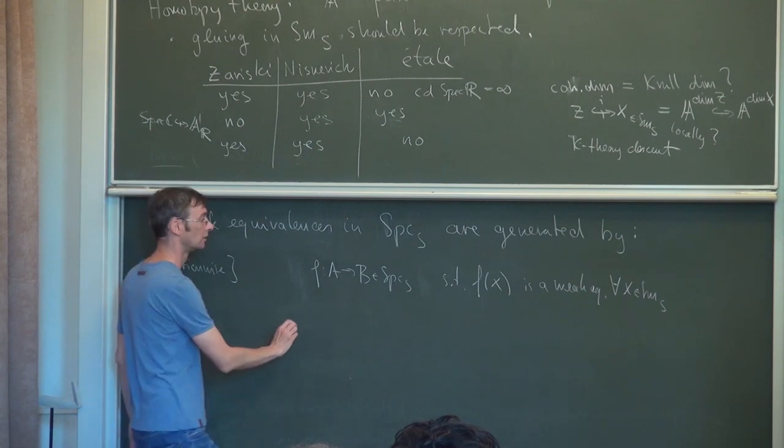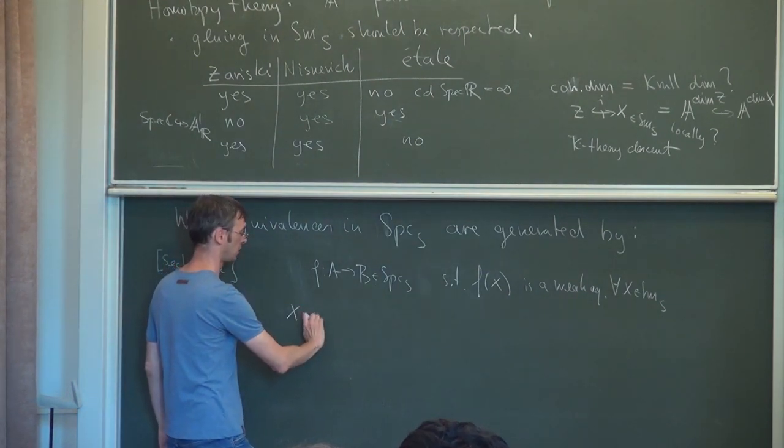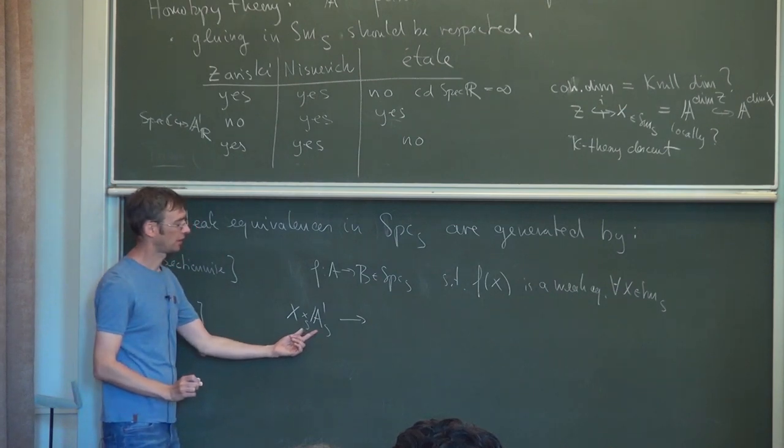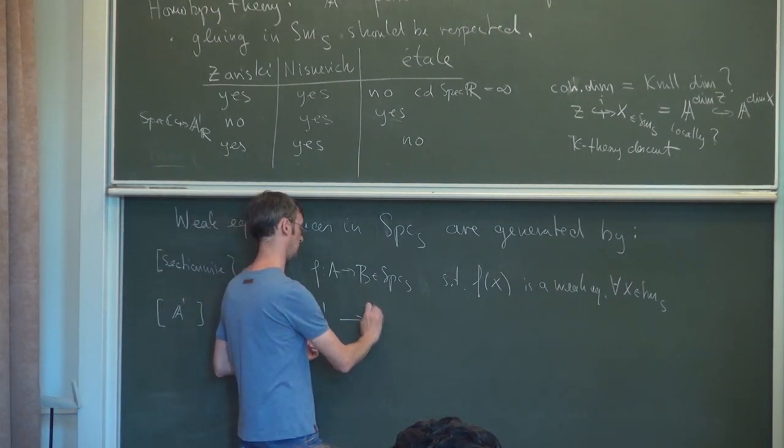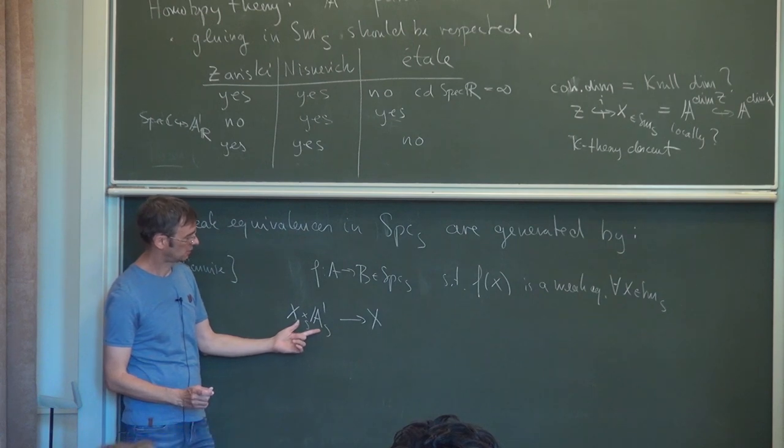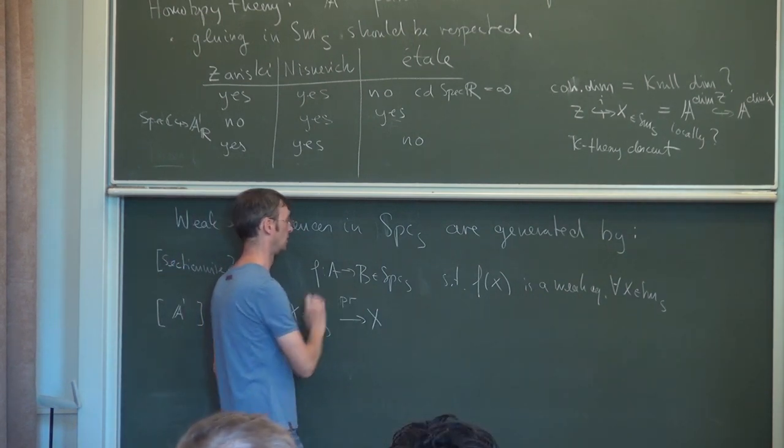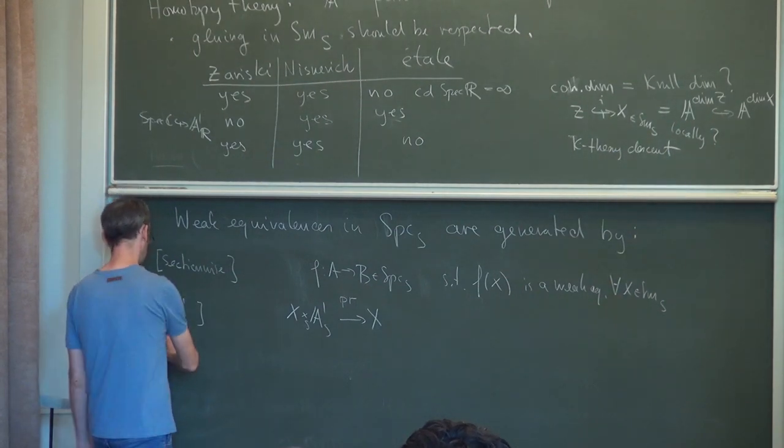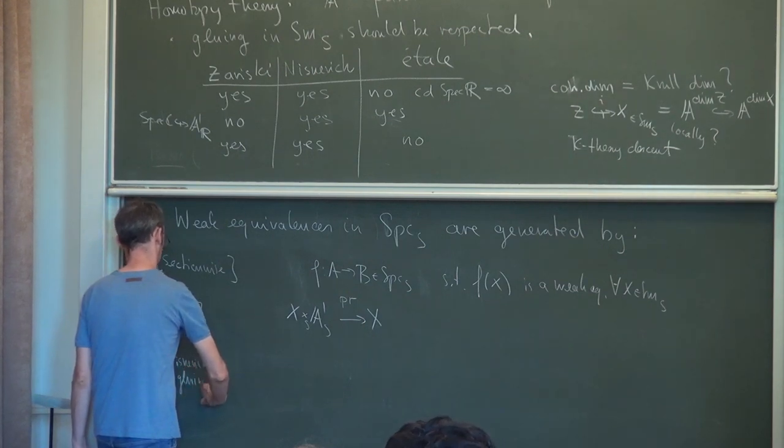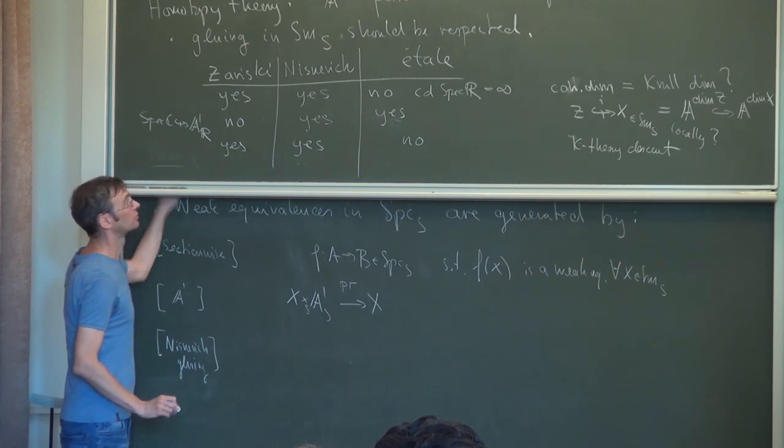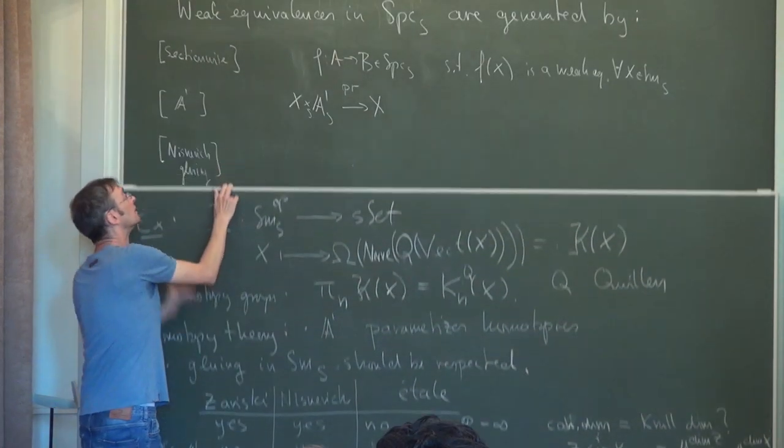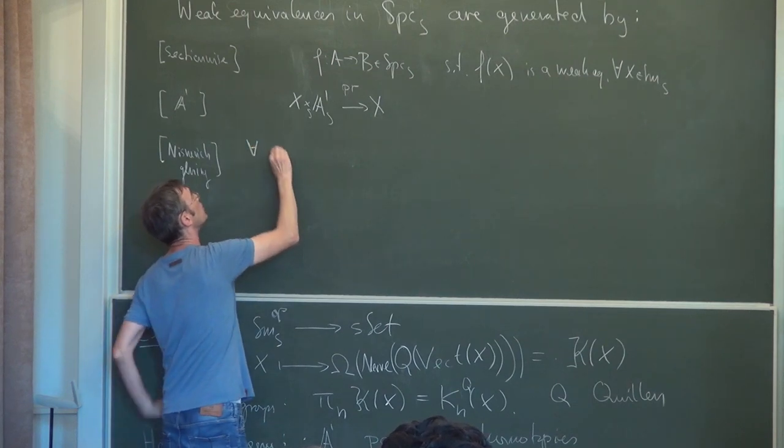The second condition is that if we really want to parameterize homotopies via the affine line, then in particular we want the affine line to be contractible, and the smallest condition one can reasonably make is that these projections A¹ × X → X are weak equivalences.